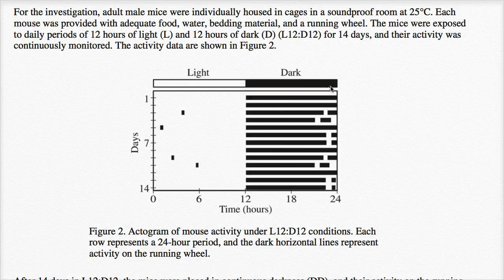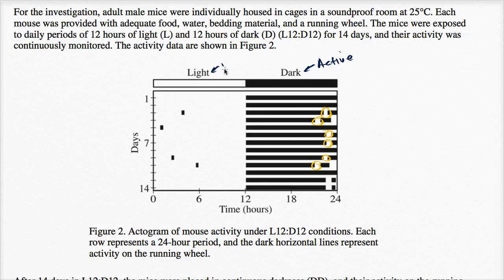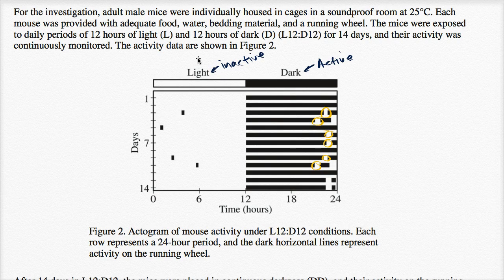And when it's dark, it's the opposite. We detect a lot of activity on that running wheel. There's a few gaps right over here, but for the most part, the mouse is active when it's dark. So the mouse is active when it's dark and inactive when it is light, which is the opposite of most human beings, where we tend to be active in the light and inactive in the dark. Interesting.